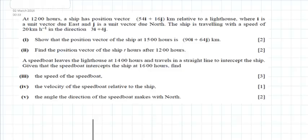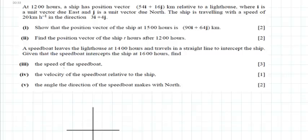Let's look at another IGCSE past paper question. At 12 hours, a ship has position vector 54i plus 16j kilometers relative to the lighthouse. Looking at the diagram, let's take this as the lighthouse.